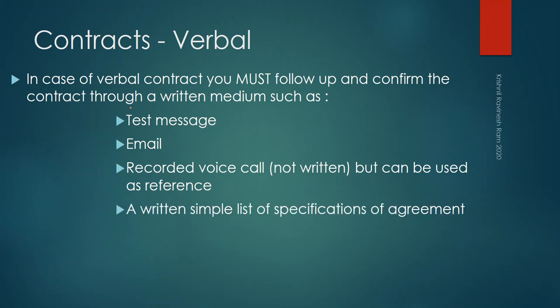A simple written list of specifications of the agreement is another option — you can write a list and get your contractor to sign it, or email it as an attachment. It sets out a guideline for how the work has to be done. In these cases, you don't want to get too aggressive regarding contracts, otherwise you'll scare off the contractor — especially in this region where contractors are hesitant to enter written legal agreements, as they worry about things they may have overlooked.